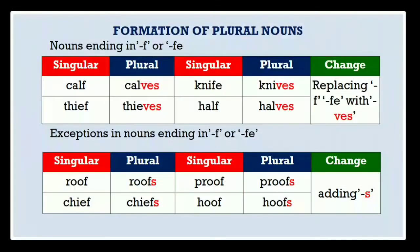Nouns ending in f or fe. Examples are: calf — calves, thief — thieves, knife — knives, half — halves. Here, when nouns are ending in f or fe, we make plural by replacing f or fe with ves. Exceptions in nouns ending in f or fe: there are some exceptions of this rule — roof — roofs, chief — chiefs, proof — proofs, hoof — hoofs. Here we have just added s. These are the exceptions of this rule.